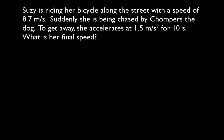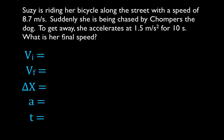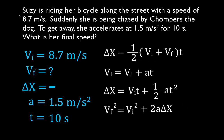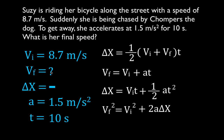Let's try one more. Susie is riding her bike at 8.7 meters per second. Suddenly she's being chased by Chompers the dog. To get away she accelerates at 1.5 meters per second squared for 10 seconds, and we want to know what is her final speed. Again, I'll write down all five variables: initial velocity, final velocity, change in position, acceleration, and time. Filling in what I know: initial velocity is 8.7 meters per second, acceleration is 1.5 meters per second squared, time is 10 seconds. We're trying to find the final velocity. We're not given the change in position and we're not solving for it.